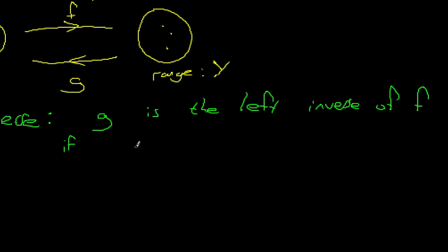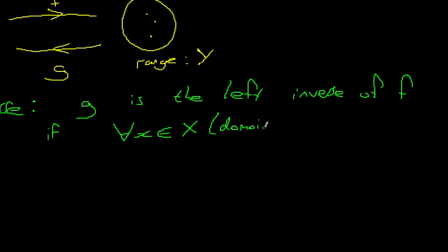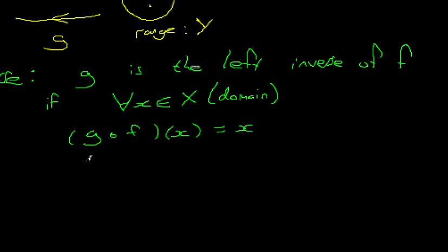g is the left inverse of f if, for all x in X, which is our domain, g composed with f acting on x equals x. This can be rewritten as g of f of x. Basically, g is a left inverse of f if given any x, applying the combination g to the left of f, the combination f and then g gives you back x.